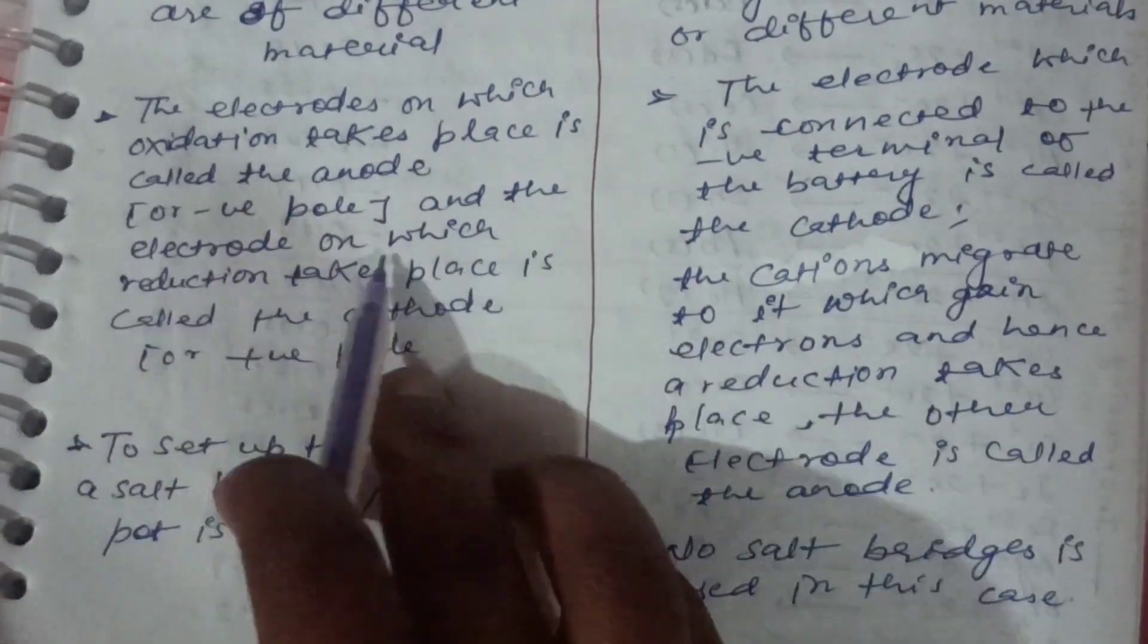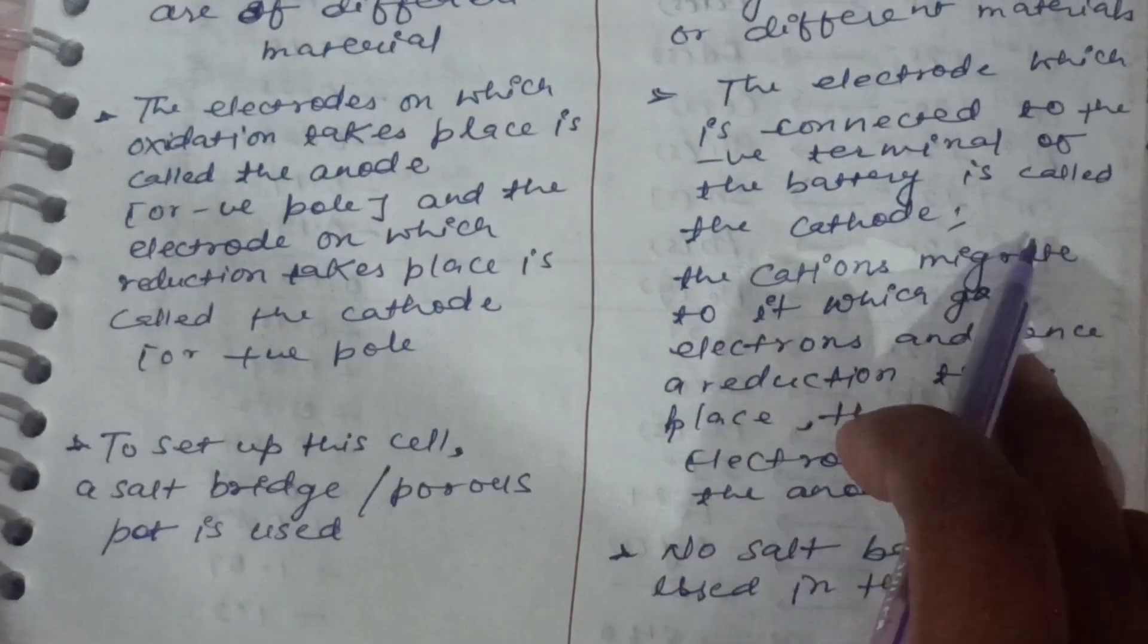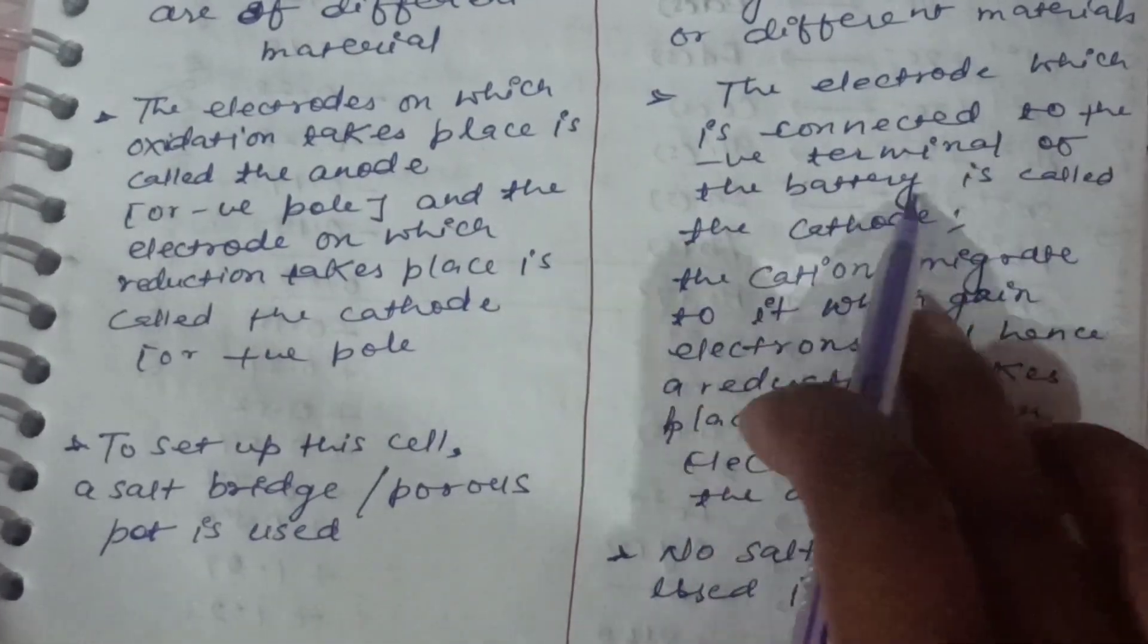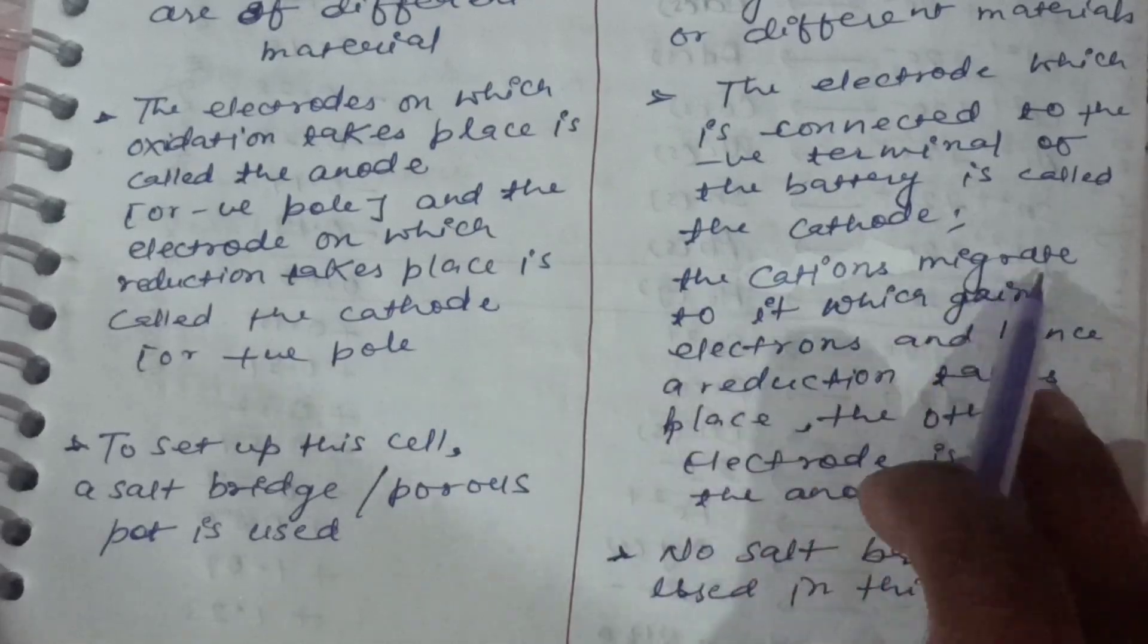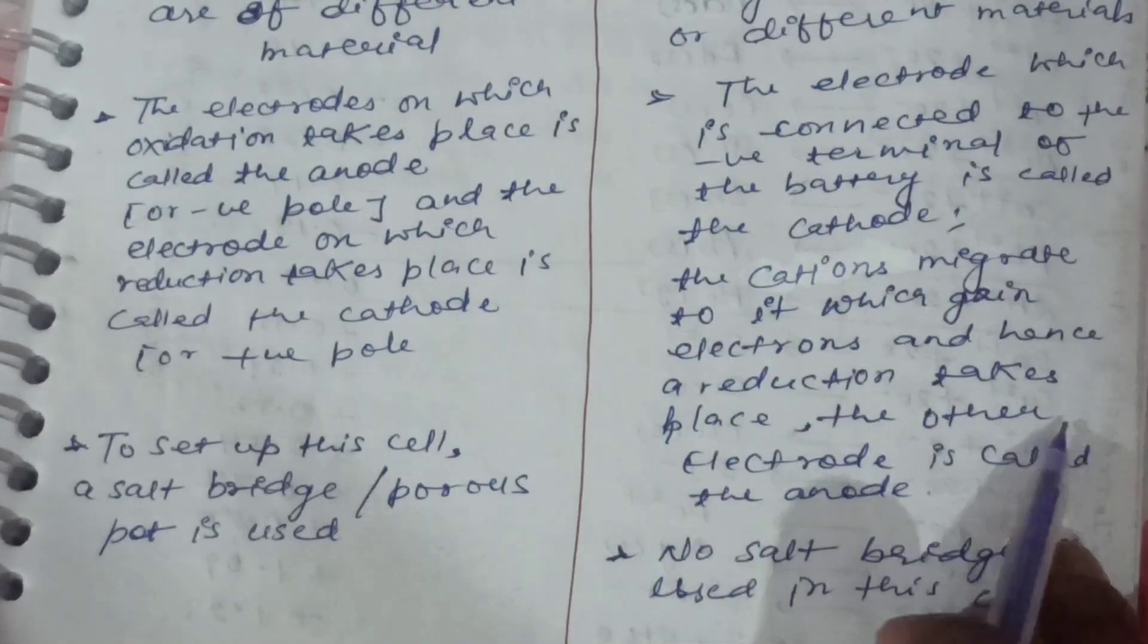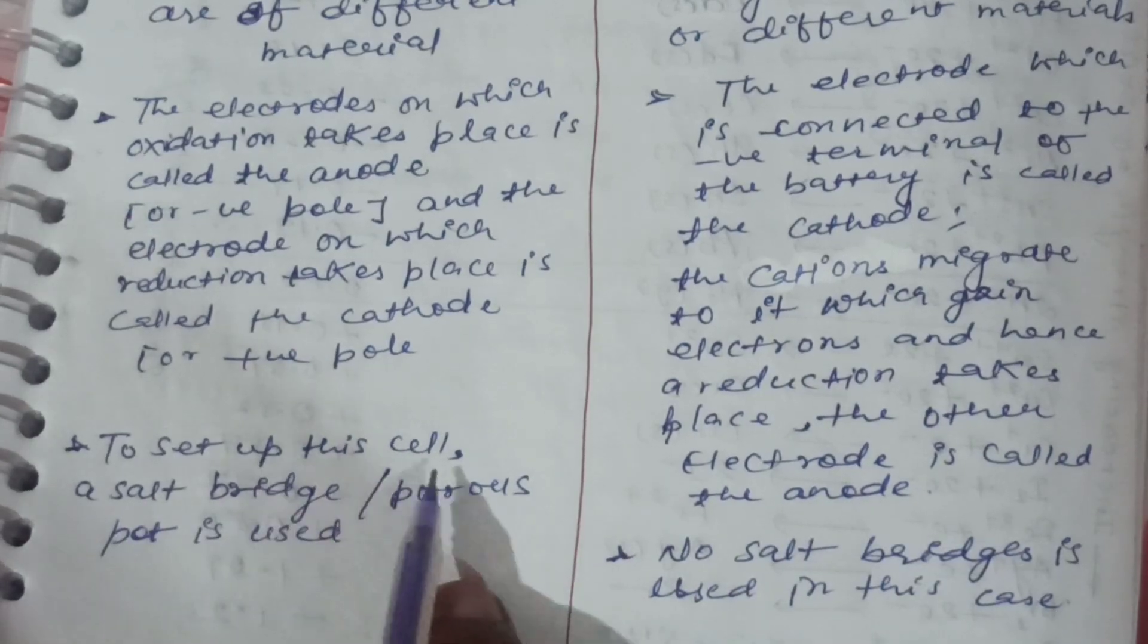The electrodes on which oxidation takes place is called the anode, negative pole, and the electrode on which reduction takes place is called the cathode or positive pole. The electrode which is connected to the negative terminal of battery is called the cathode. The cations migrate to it which gain electrons and hence a reduction takes place. The other electrode is called the anode.